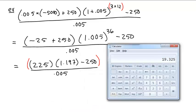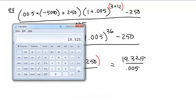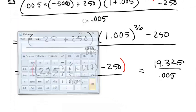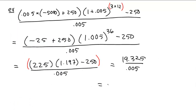Make sure we have that number, make sure that there's nothing else going on, divided by .005 and we get 3,865, 3,865 is the answer.